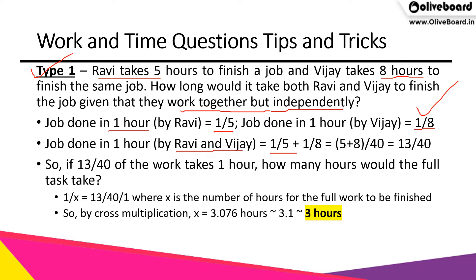Job done in one hour by both Ravi and Vijay working together is 1/5 plus 1/8, which equals 13/40. This is the fraction of work completed in one hour. We need to find how many hours are required to finish the full task. So we set up a cross multiplication: in X hours, 13/40 of work per hour completes the whole task (equal to 1).